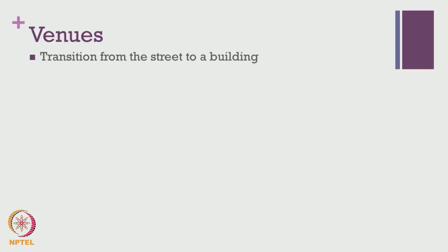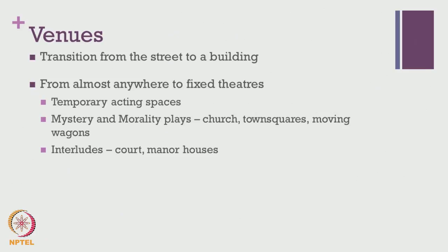How were these venues getting shaped and refined during the Elizabethan times? We find a transition from the street to a building, made possible only from the Elizabethan times onwards. Earlier plays were staged almost anywhere — there was no fixed theatre in England, and initially most plays were staged in certain temporary acting spaces. We saw in the case of the mystery and morality plays which were staged in the church first, then into town squares, and on moving wagons which took actors from one location to another. The interludes made their way into the court sphere, into manor houses, into private wealthy audiences. This transition takes place quite gradually and completes a full cycle during the Elizabethan times.